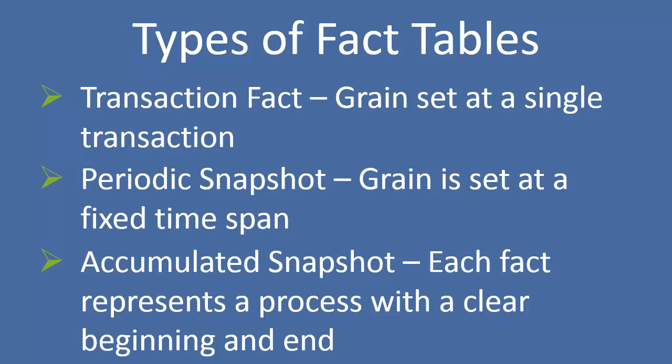Then you have your periodic snapshot. This is where you'll take a period of time — let's say a month — and you'll create a fact with a balance for that month, such as my account balance for the month of January. That would be a single fact.